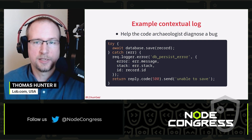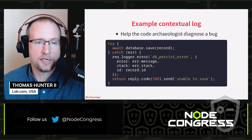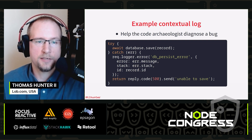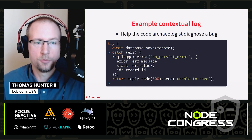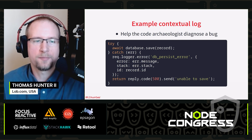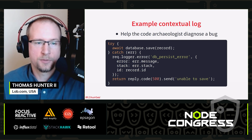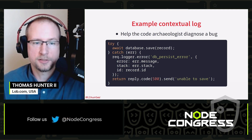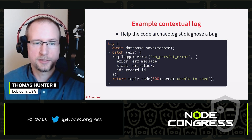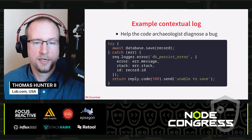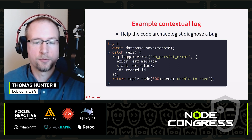Here's an example of another log. This time we're attempting to save data to a database, but a problem has happened. We wrap that in a try-catch, catch the error, and log the stack trace. We call request.logger.error to create an error message. The name of the message is db-persist-error, and we assign the error message, error stack, and even the record ID to that log, so a developer can later find out why that record didn't persist.